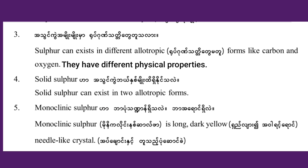Monoclinic sulfur is a long, dark yellow, needle-like crystal. Monoclinic sulfur can exist in allotropic forms.